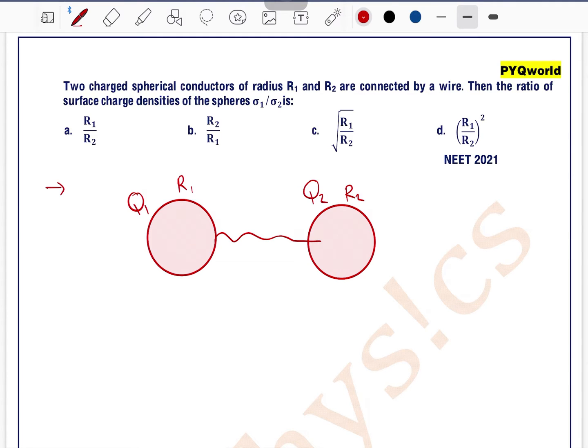Both are connected by a conducting wire. So charge will flow from higher potential to lower potential until potential becomes same. We can write at equilibrium the potential of both spheres will be same.